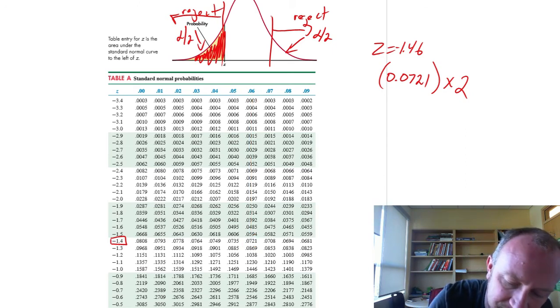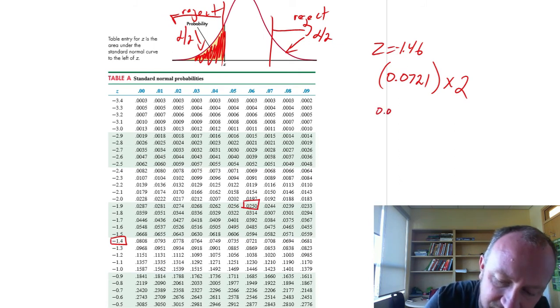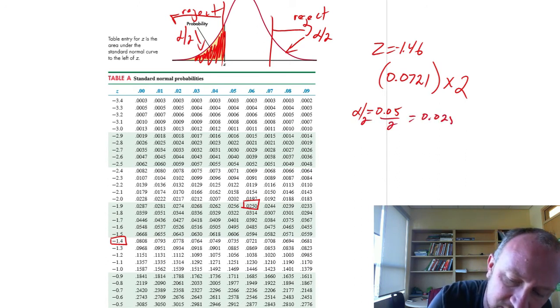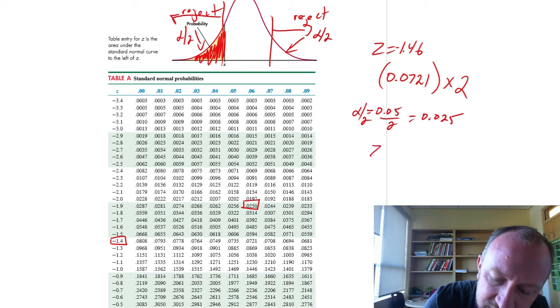And so, here we should have this one memorized by now. 0.025, right? Because alpha is 0.05. Alpha divided by 2 is 0.025. So, our critical value is 1.96.